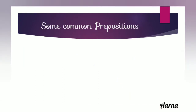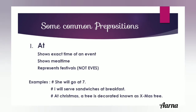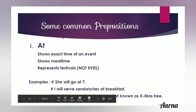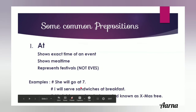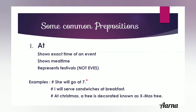Now, let us talk about some of the common prepositions we use in our daily life. The first one is 'at'. It shows the exact time of an event, a meal time, or festivals, but not the eves or days. For example, 'she will go at 7' — 'at' describes the exact time of her going.